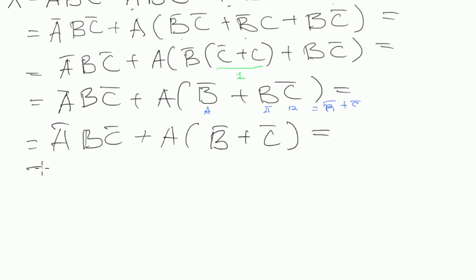We still have A̅BC̅ plus A, and in brackets we have B̅ plus C̅. Now let's open the brackets. So we have AB̅ plus AC̅. What can we do next? We have A̅, B, B̅, C. Maybe we can take C̅ out of brackets.